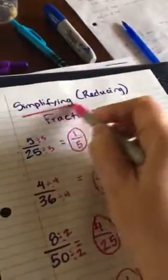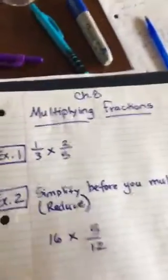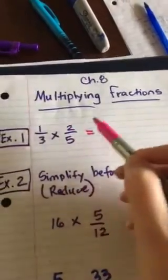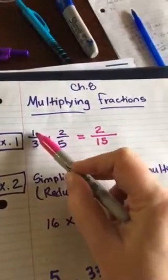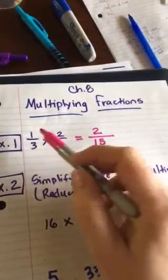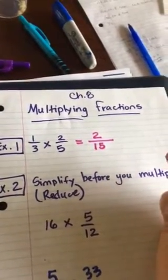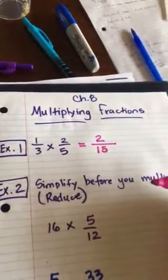We're going to be using this concept — reducing fractions or simplifying fractions — in Chapter 8, which is about multiplying fractions. The basic rule for multiplying fractions is you just multiply straight across. So what is 1/3 times 2/5? Your answer is 2/15. You just multiply straight across. The book will show you some models that tell you why this is true, but the basic thing you need to learn is you multiply straight across when multiplying fractions.